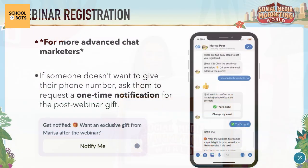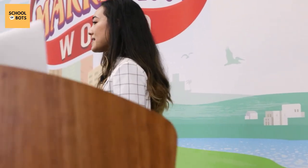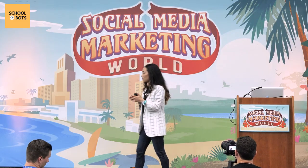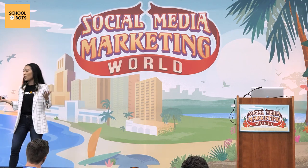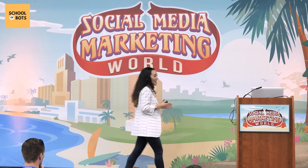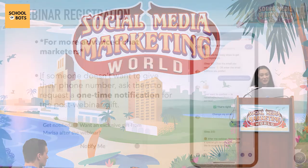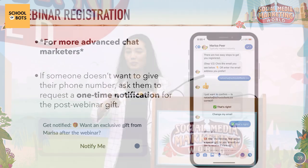For more advanced chat marketers: every time someone says no, that opens a new door to bring them value differently. There's something called the one-time notification that Messenger released in February. It essentially gives you a token to message that person in the future, but it must be about the same topic. You can't promise a pre-webinar reminder and then message them about a Black Friday sale — it needs to be relevant and you need to keep your promise. It'll show a 'Get Notified' button with 'Notify Me' as required by Facebook.